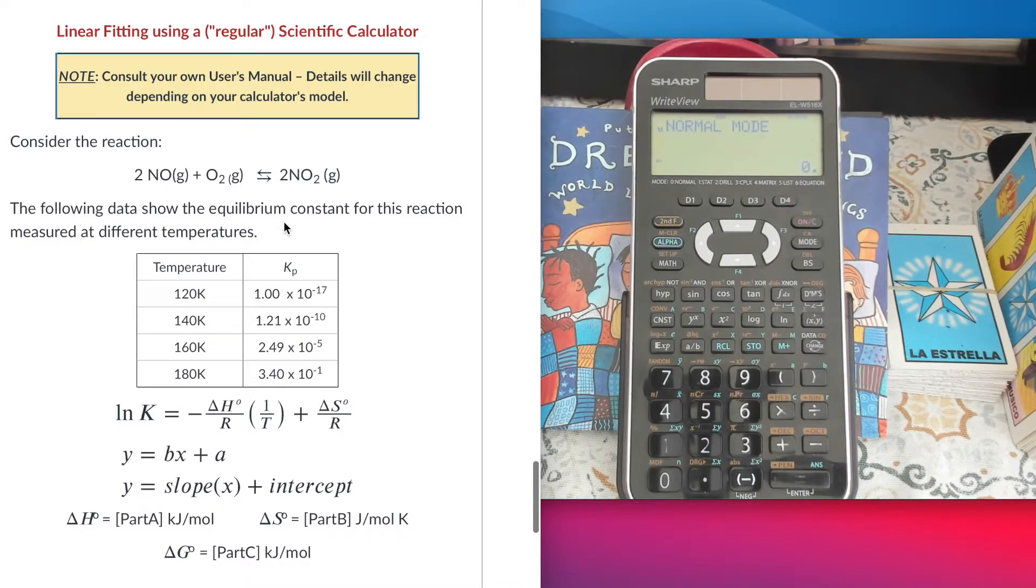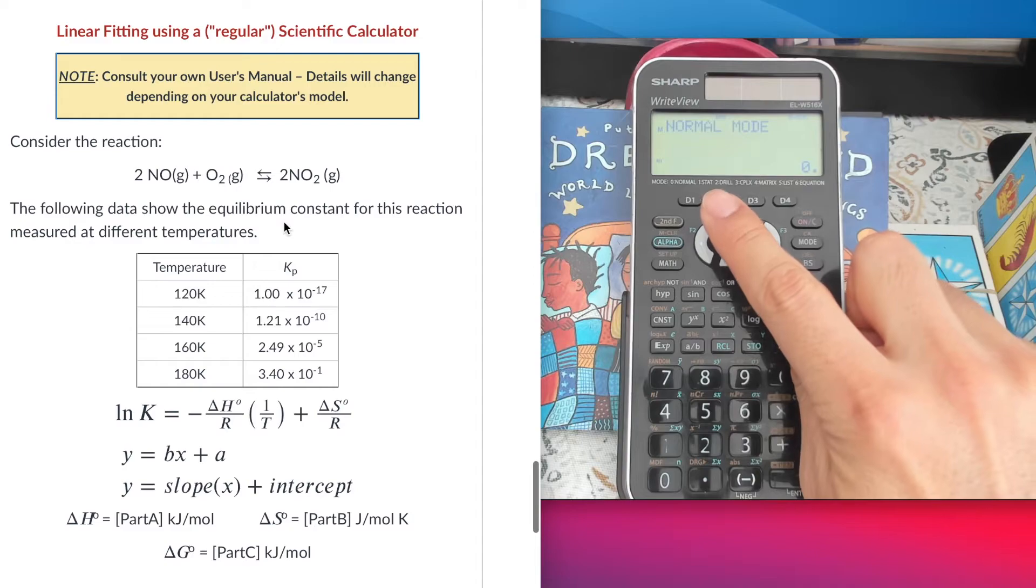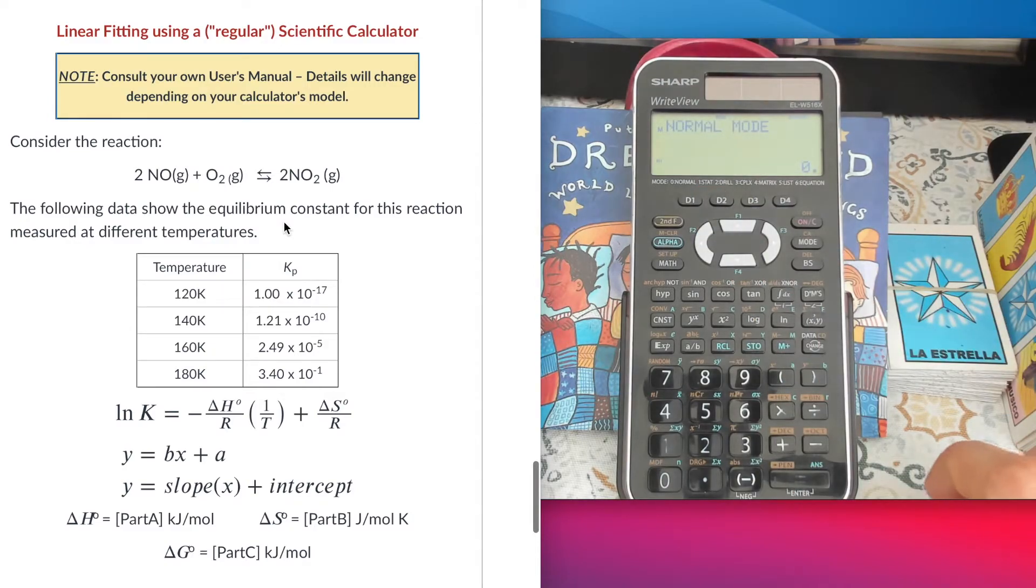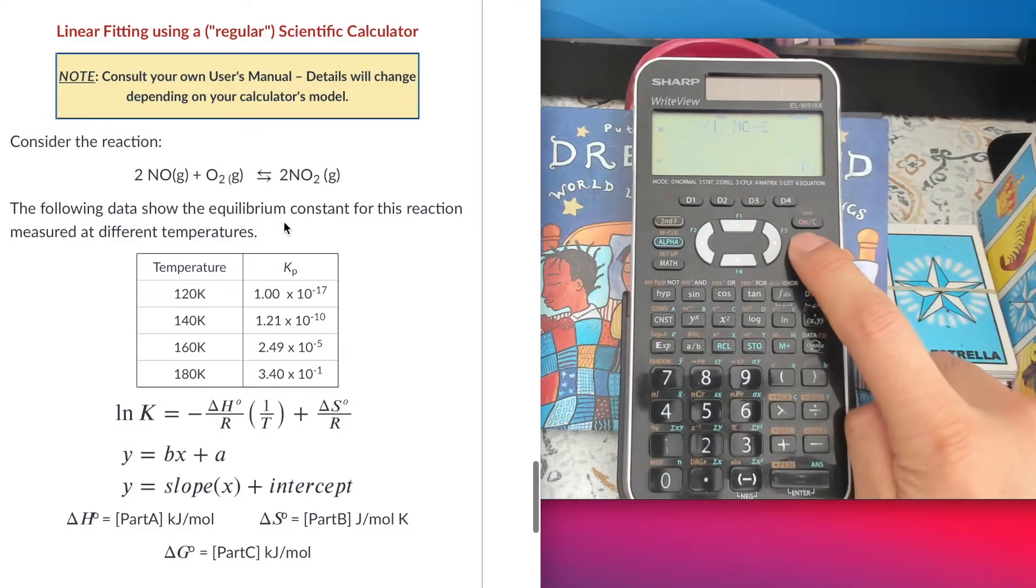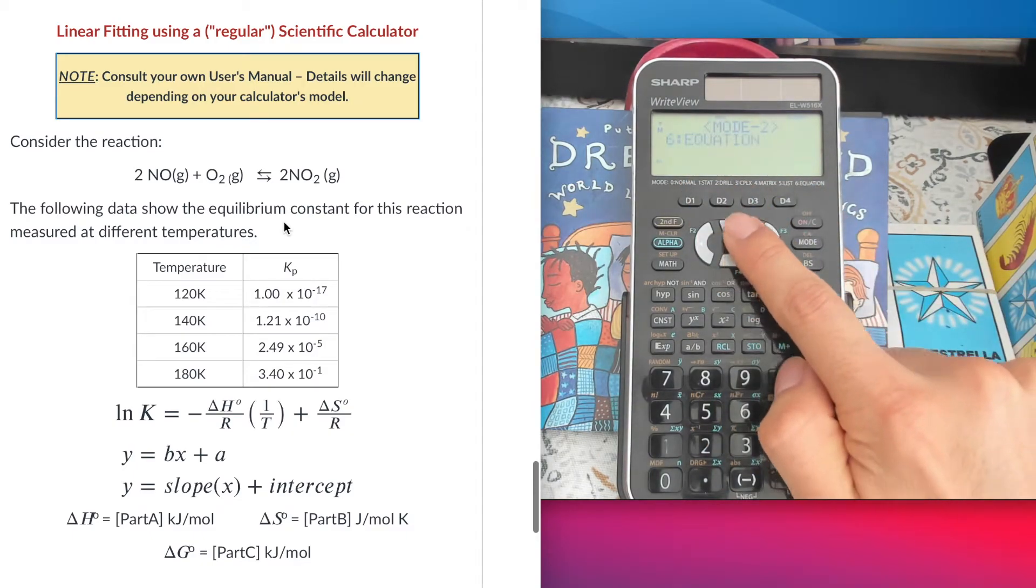Let's see now how we can do this in a calculator. Again, remember you need to check that your calculator has this statistics mode. I'm going to click mode, and then I have a list of all the modes that my calculator has.